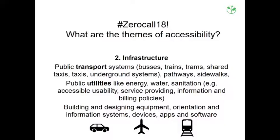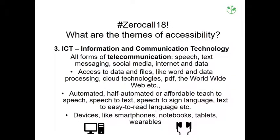The second topic is infrastructure. We talk about trains, buses, long distance and short distance travel. We talk about public utilities — how accessible is the utility bill for people with disabilities, and how are companies reacting to the needs of this market? We also cover building and designing equipment, orientation and information systems, as well as devices, apps and software.